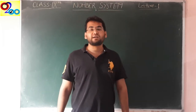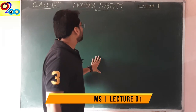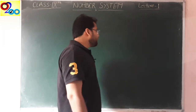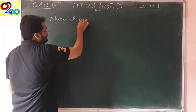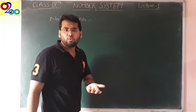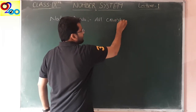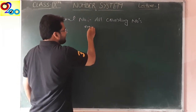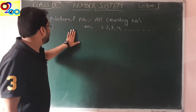Today I am going to start my first lecture of Class 9 Maths — that is the Number System. Today's class will be just a basic class. The first part is: what is a natural number? All counting numbers that start from 1 and go to infinity are called natural numbers. Example: 1, 2, 3, 4 up to infinity — those are natural numbers.